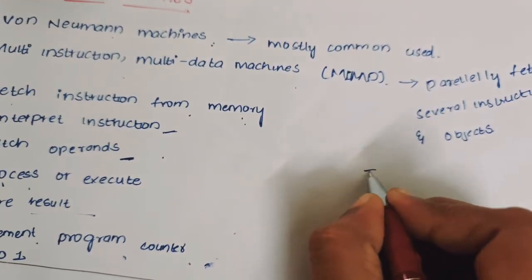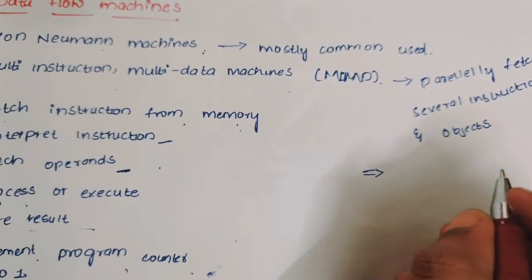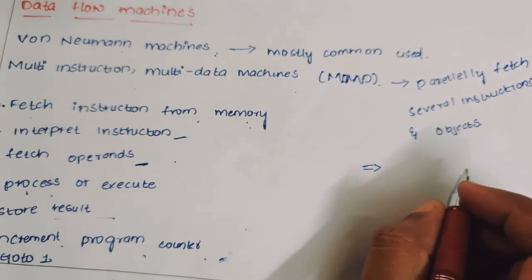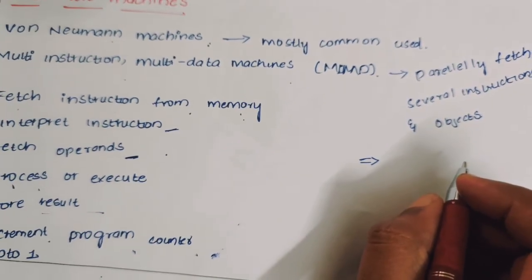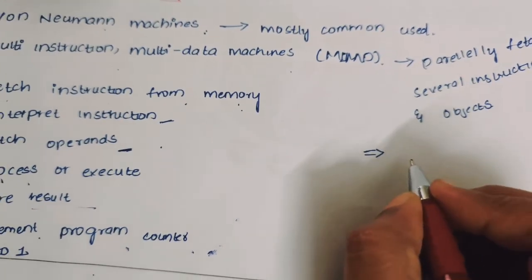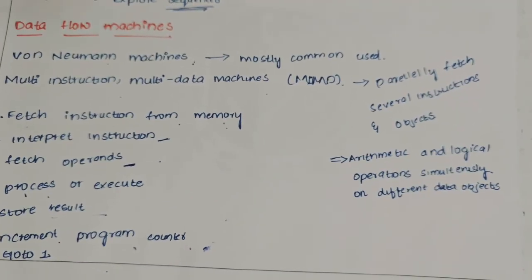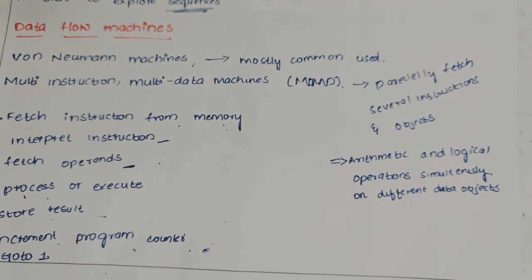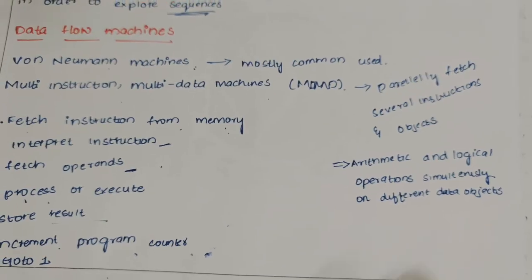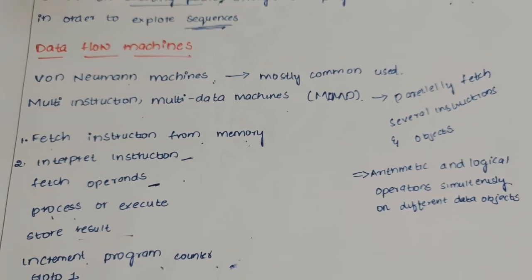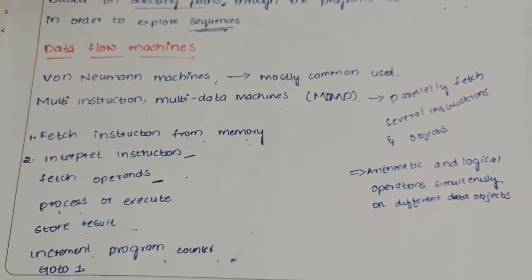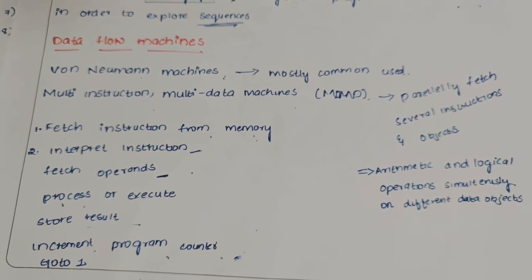They can also do arithmetic and logical operations simultaneously on different data objects. This is about multi-instruction multi-data machines, MIMD. These are the two different machines in data flow testing.